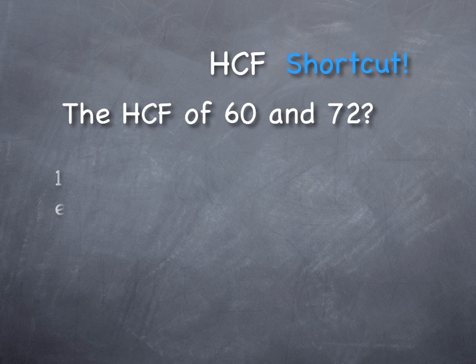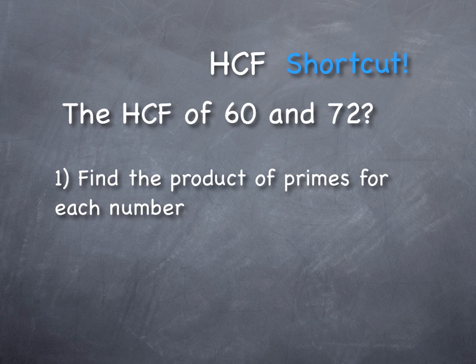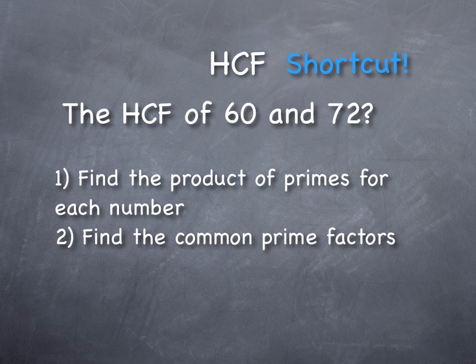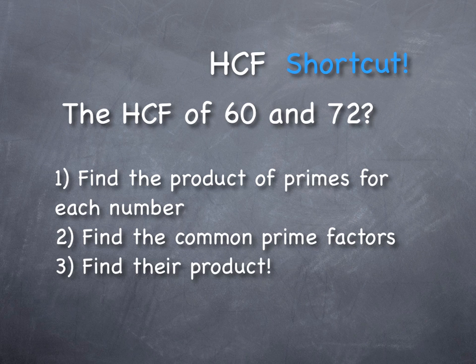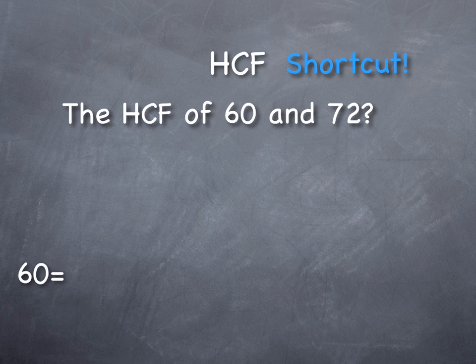The first thing I want to do is take and find the product of primes for each number. Then we're going to find the common prime factors. Instead of finding the highest one directly, we're going to find all the products of primes, look for how many prime building blocks they have in common, and then we're going to multiply those. And that will be equal to the highest common factor.